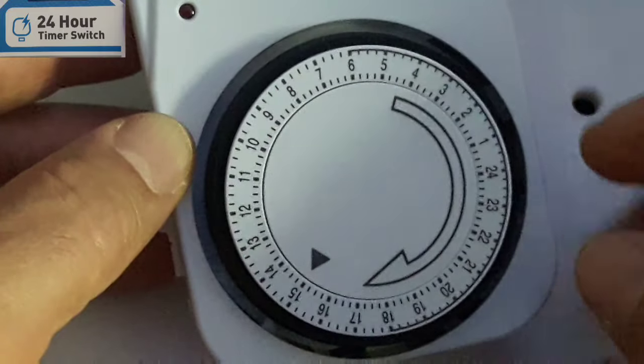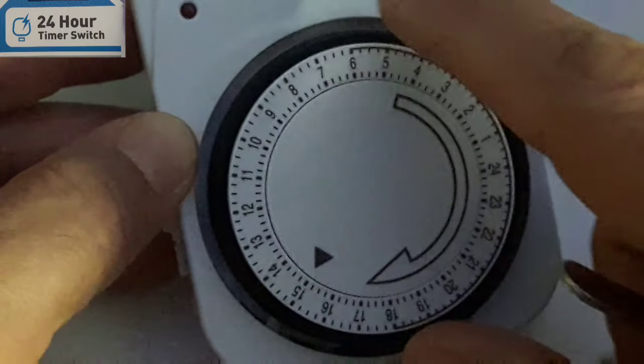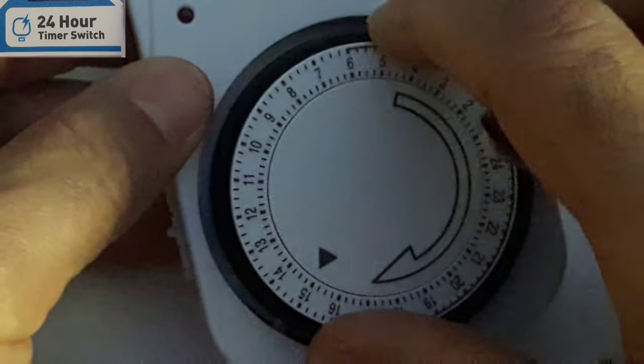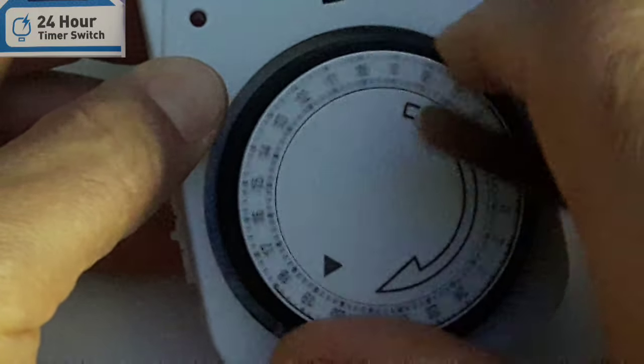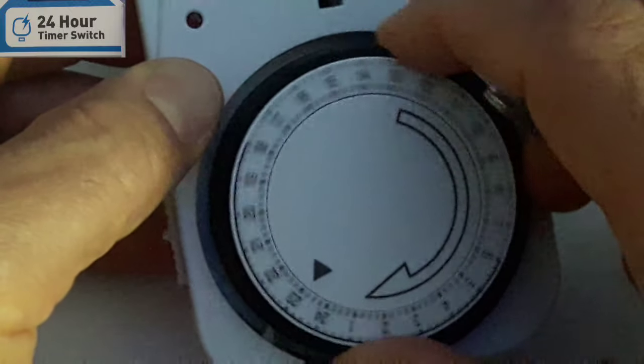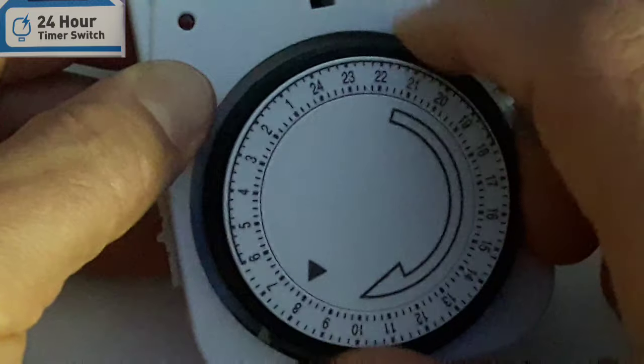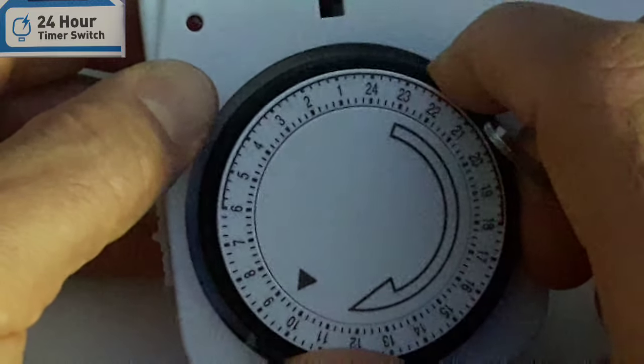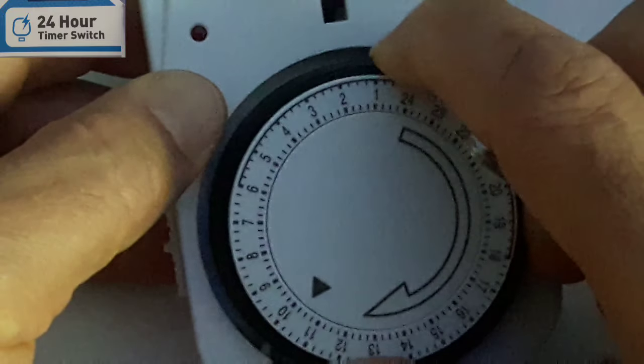I'm going to show you now how to set up your timer. Our time now is nine o'clock, so I'm going to turn this arrow, this clock like this, till I get to nine o'clock in the morning. I have to put the arrow in front of nine o'clock.